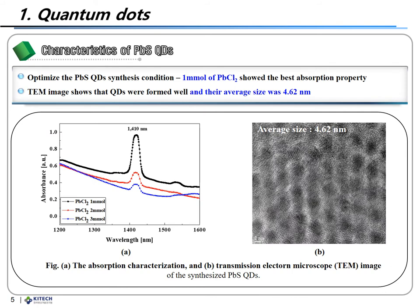As shown in the figure, we observed an absorption peak at the wavelength of 1410 nm. This result shows that the synthesized PbS quantum dots could absorb 1410 nm wavelength light and generate electron-hole pairs by absorbing IR light. Additionally, the TEM image confirmed the synthesized PbS quantum dots, and the particle size was confirmed to be 4.62 nm.